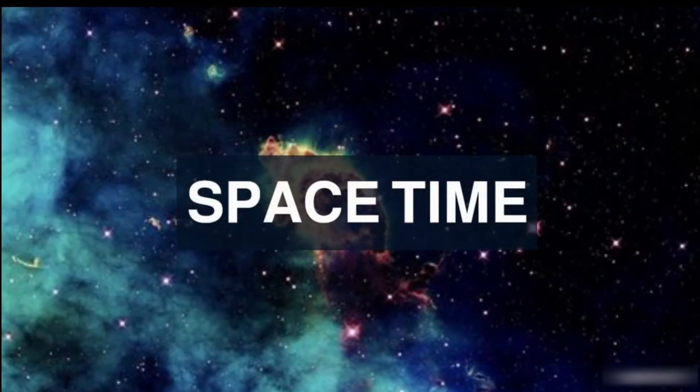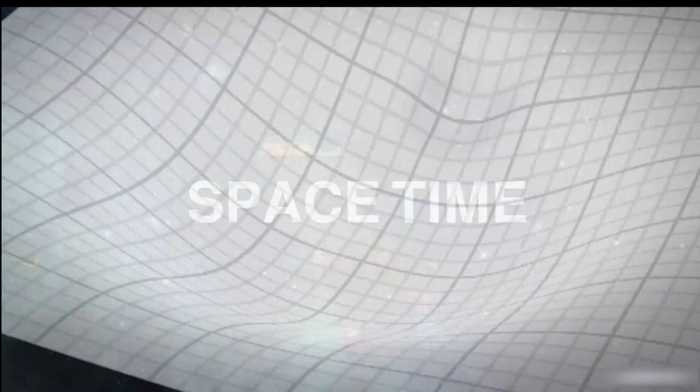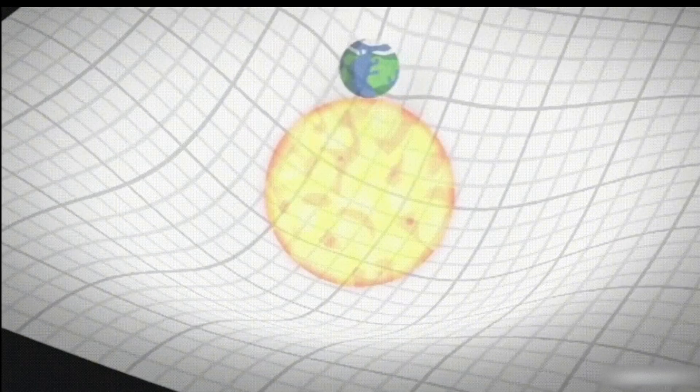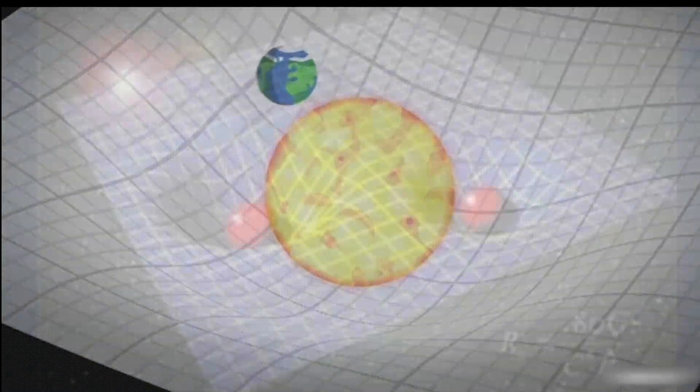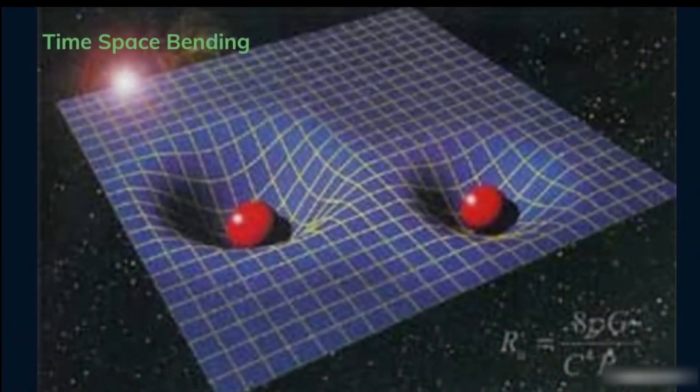To understand the concept of singularity, it's better to know about space-time. Imagine space-time like a stretchy sheet. Planets and stars make dents in this sheet, affecting how things move, kind of like gravity.